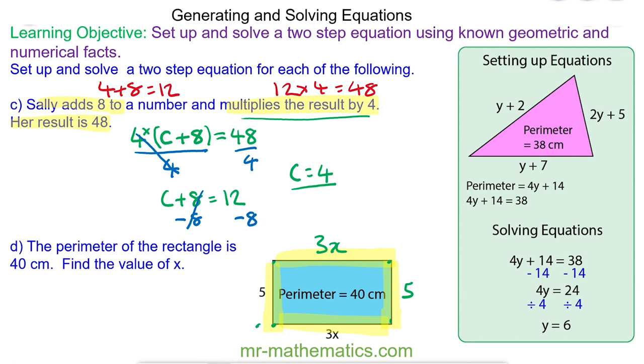The perimeter is the total distance around the edge. So we have the 5, the 3x, the 5 and the 3x which is 10 add 6x. And that is equal to 40. So now we can solve this equation by taking away 10 from both sides. 10 take away 10 will make 0. So 6x will equal 30. We can divide both sides by 6. So x will equal 5.